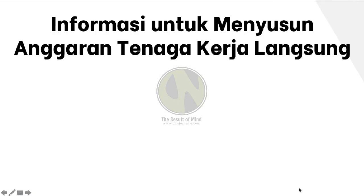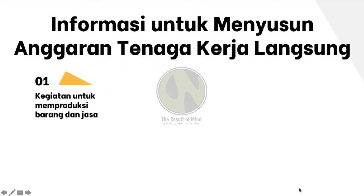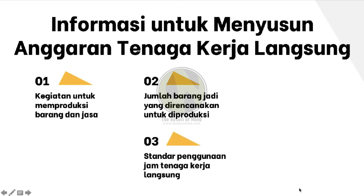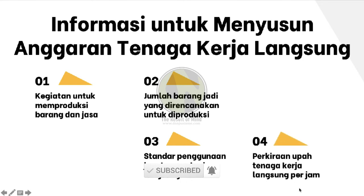Untuk menyusun anggaran tenaga kerja langsung, perusahaan membutuhkan informasi-informasi berikut ini. Pertama, kegiatan-kegiatan yang dilakukan untuk memproduksi barang dan jasa, misalnya pemotongan bahan baku, pencucian bahan baku, dan pengemasan barang jadi. Kedua, jumlah barang jadi yang direncanakan untuk diproduksi — informasi ini diperoleh dari anggaran produksi. Ketiga, jumlah jam tenaga kerja langsung yang diperlukan untuk memproduksi satu unit barang jadi, atau disebut standar penggunaan jam tenaga kerja langsung. Dan keempat, perkiraan upah tenaga kerja langsung per jamnya.